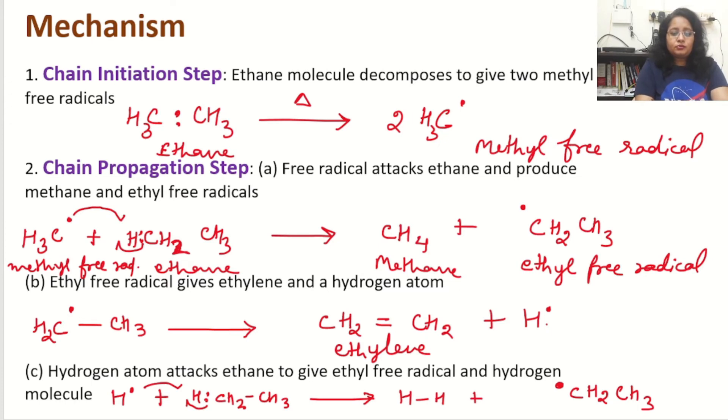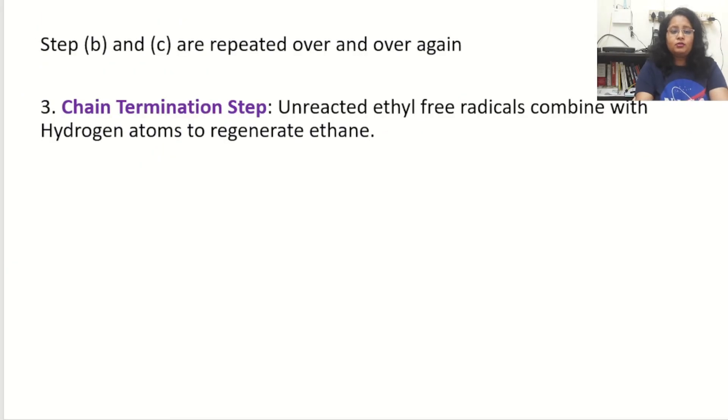So we can see ethyl free radical is formed again. What is going on? Steps B and C are repeated over and over again because in step 2 we have hydrogen atom and in step 3 ethyl is formed. So again and again they will be formed and the reaction will be going on for several time periods until all the steps are over.